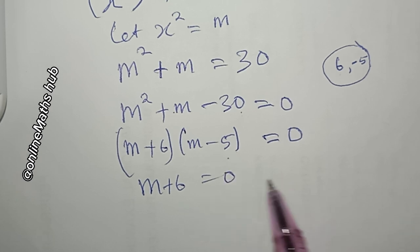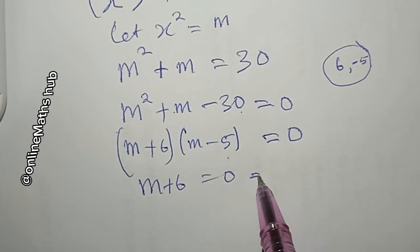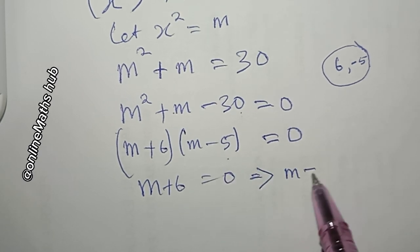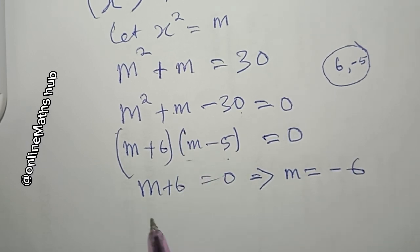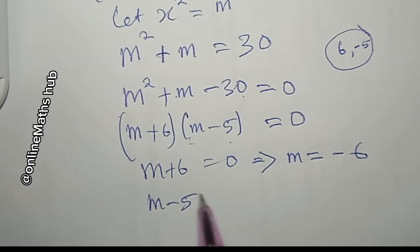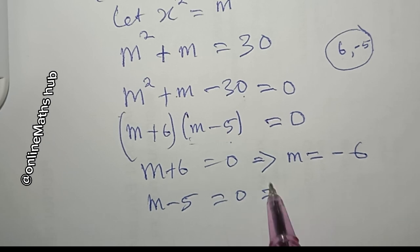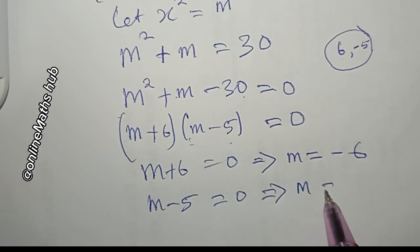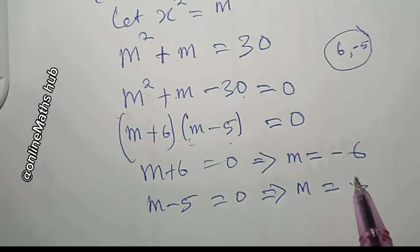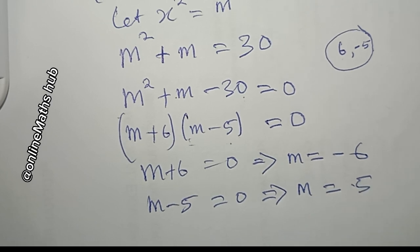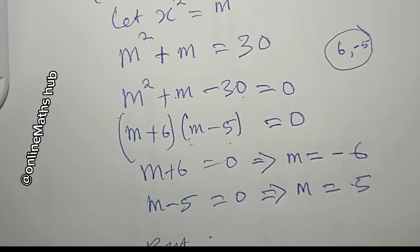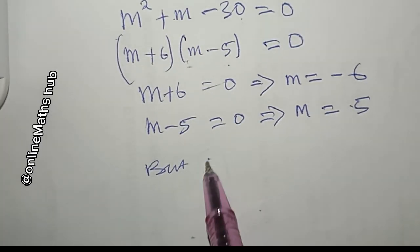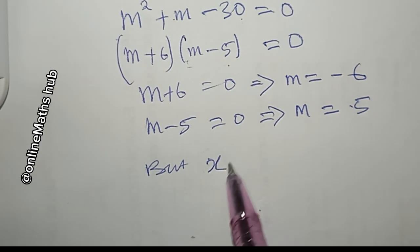Using the zero product rule, m plus 6 equals zero, which implies m equals negative 6. The second factor, m minus 5 equals zero, implies m equals positive 5.